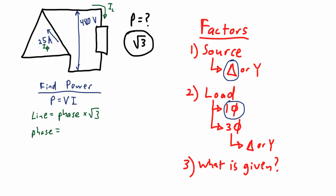So just to repeat that really quickly: when moving from phase to line, we multiply by root 3, we're going from small to large. When moving from line to phase, we divide by root 3, we're moving from large to small.